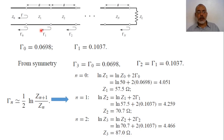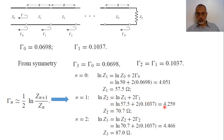In a similar way, γ_1 = (1/2)·ln(Z_2/Z_1). We already have Z_1, so ln(Z_2) = ln(Z_1) + 2γ_1. ln(Z_2) = 4.259, so Z_2 = e^{4.259} = 70.7 ohms.